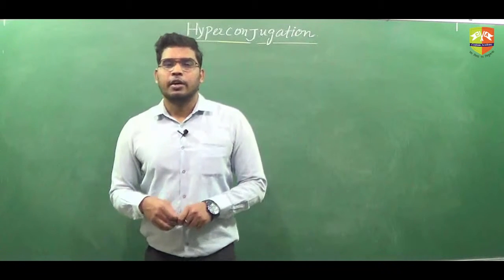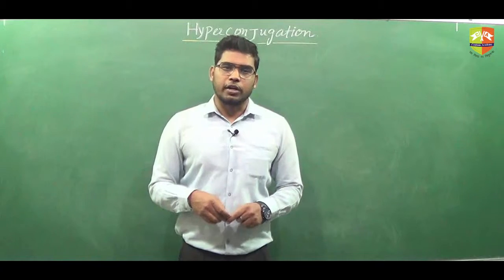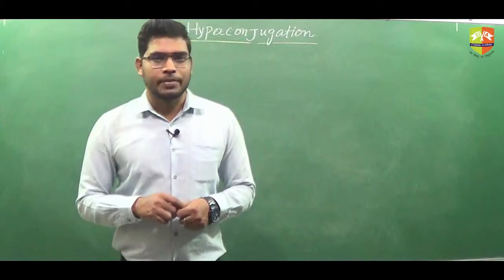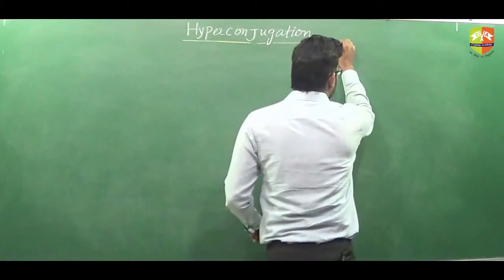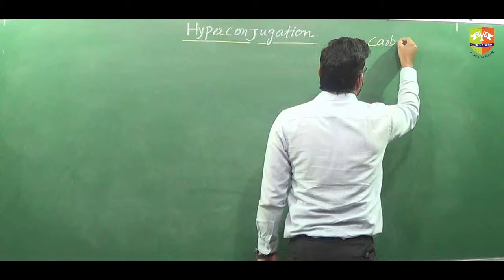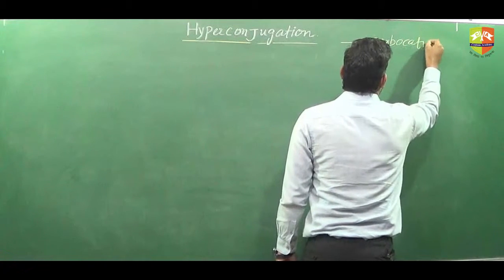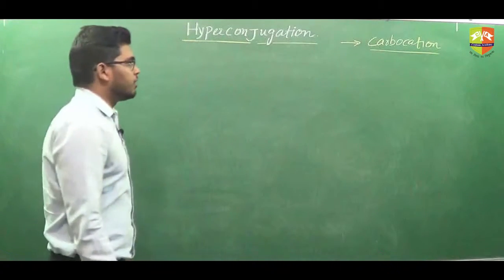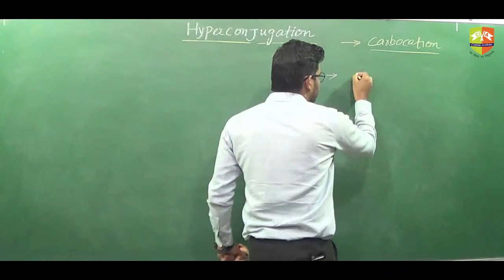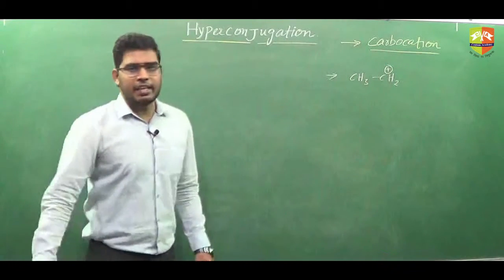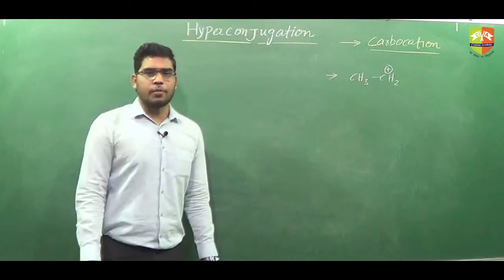So the next part we are going to discuss here is hyperconjugation in carbocation — how hyperconjugation is possible in carbocation. For example, the simplest example is CH3CH2+. Basically, alpha hydrogen is required for hyperconjugation.